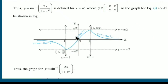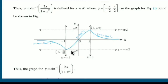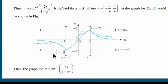To understand the graph shape, we differentiate. For y = 2tan⁻¹(x), dy/dx = 2/(1+x²) > 0 so the function is increasing on (−1, 1). For y = π − 2tan⁻¹(x), dy/dx = −2/(1+x²) < 0, so the function is decreasing for x > 1. Similarly it is decreasing for x < −1.